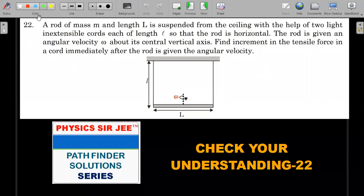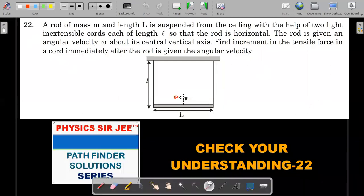So here it is. A rod of mass M and length capital L is suspended from the ceiling with the help of two light inextensible cords, very important inextensible cords, each of length small l so that the rod is horizontal.